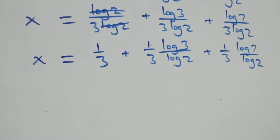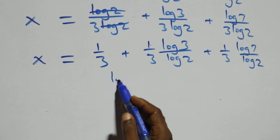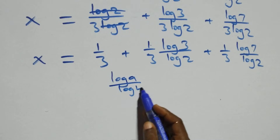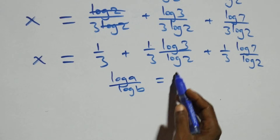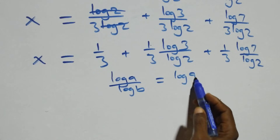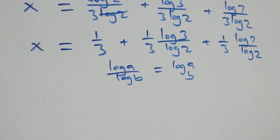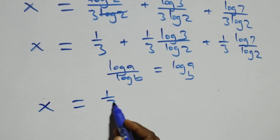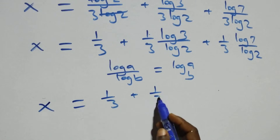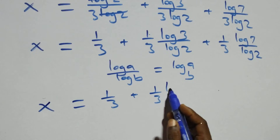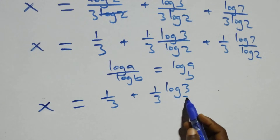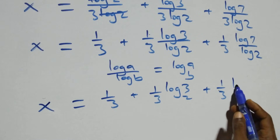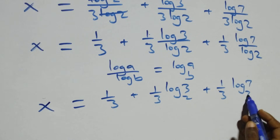We apply the change of base formula, where log a over log b is the same thing as log a to base b. Then we have x equals to 1 over 3 plus 1 over 3 log 3 base 2 plus 1 over 3 log 7 base 2.